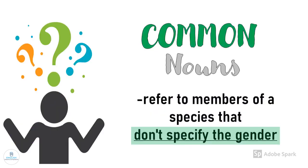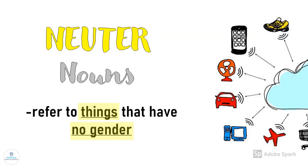Common nouns refer to members of a species that don't specify the gender. Neuter nouns refer to things that have no gender.